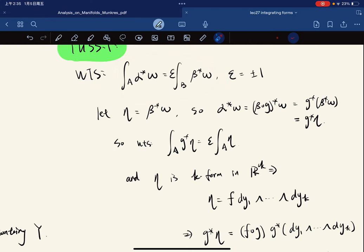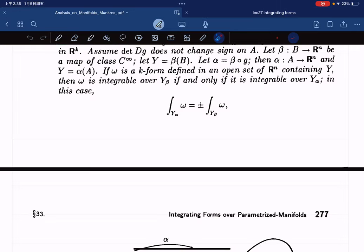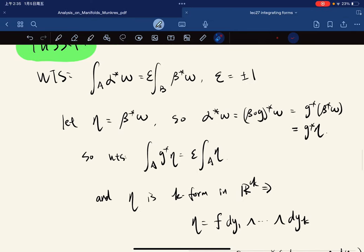We want to show this and then we use definition and we transfer it back to this. Right? Where epsilon is equal to plus minus one. Right? Okay. So we want to show this.